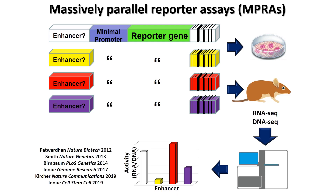We used this assay in various ways — for example, synthesizing hundreds of thousands of sequences to see if they are enhancers and learn about the regulatory code, or testing hundreds of thousands of ChIP-seq sequences to find enhancers. What I'll show you today is how we can use this to try to pinpoint how mutations lead to phenotypes in these enhancers, in particular human disease.